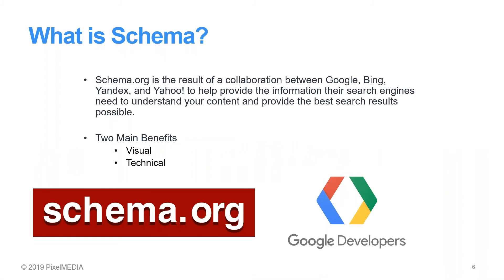So what is schema? Schema is a result of a collaboration between Google, Bing, Yandex, and Yahoo. Schema is used to help search engines better understand information on a page. There are two main benefits to adding schema to your website: visual and technical. Visual benefits can be seen on the Google search results — these are known as rich results. The technical benefits have to do with better organizing your pages so that search engines can better understand what your page is about.